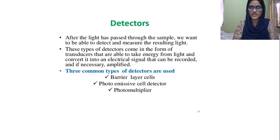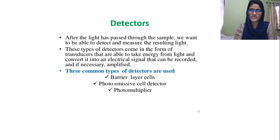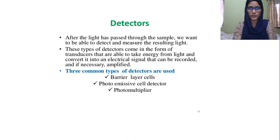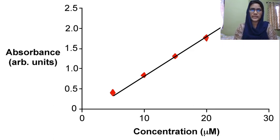Now we have to look at the detectors. Which detectors are used in UV Visible Spectroscopy? The detectors include: barrier layer cells, photo emissive cell detector, and photomultiplier. These are the names of the detectors used in UV Visible Spectroscopy.